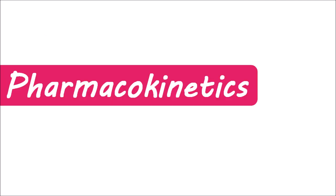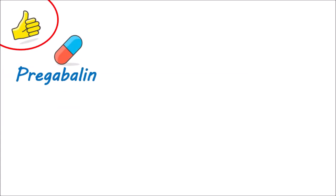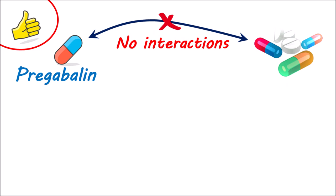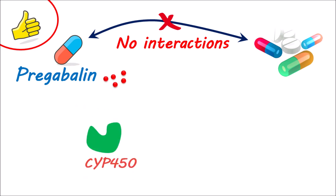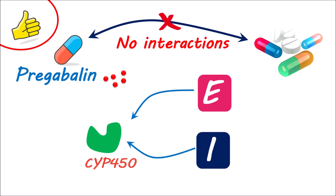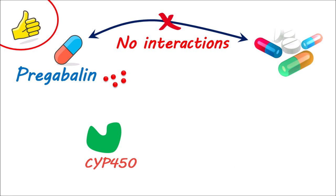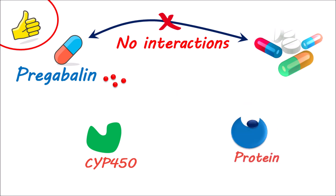Now let's see the pharmacokinetics of pregabalin. Pregabalin has the benefit of exhibiting fewer pharmacokinetic interactions with other medications. Pregabalin is not considerably metabolized by CYP450 enzymes because it is primarily excreted unaltered in the urine. Hence, CYP450 enzyme inhibitors or enhancers may not have a major impact on pregabalin plasma levels. Because this medicine is less protein-bound, even interactions caused by protein displacement are not seen.